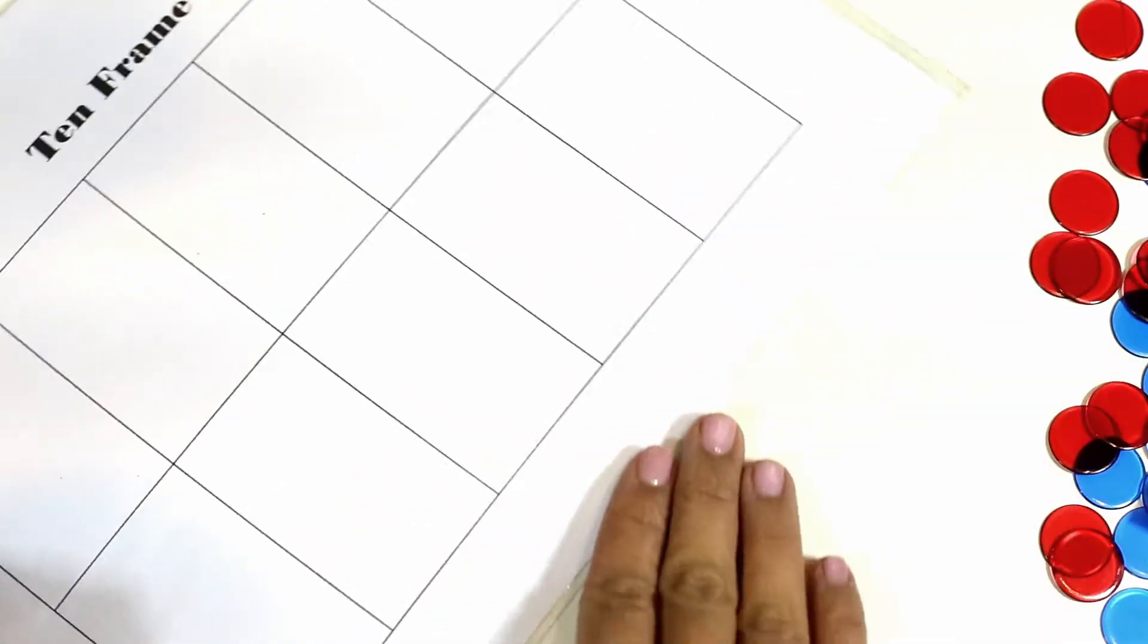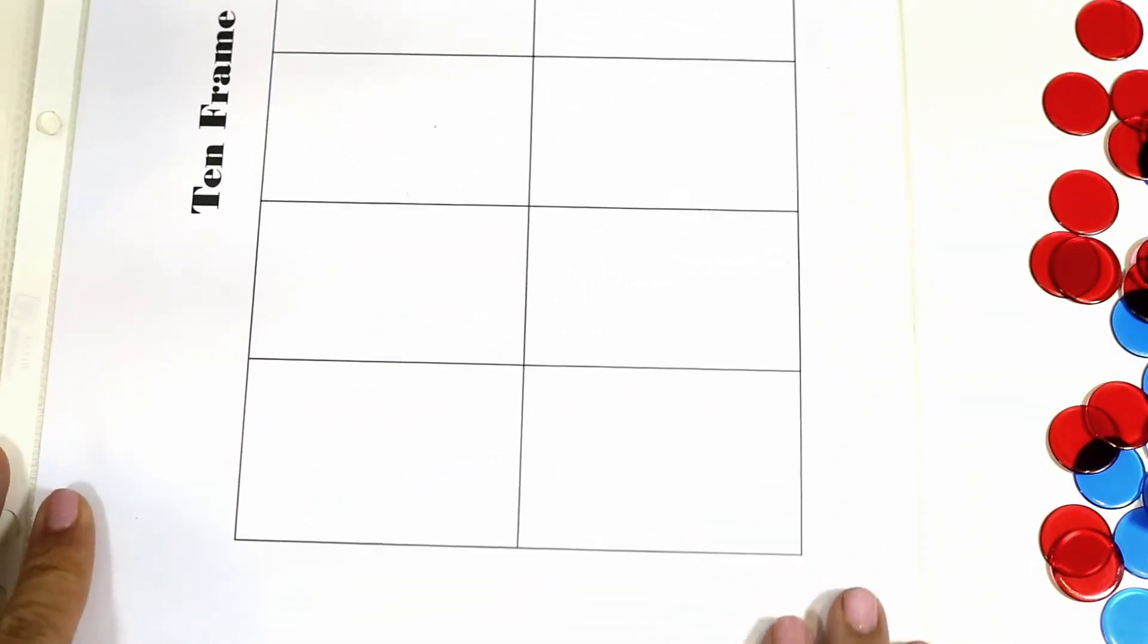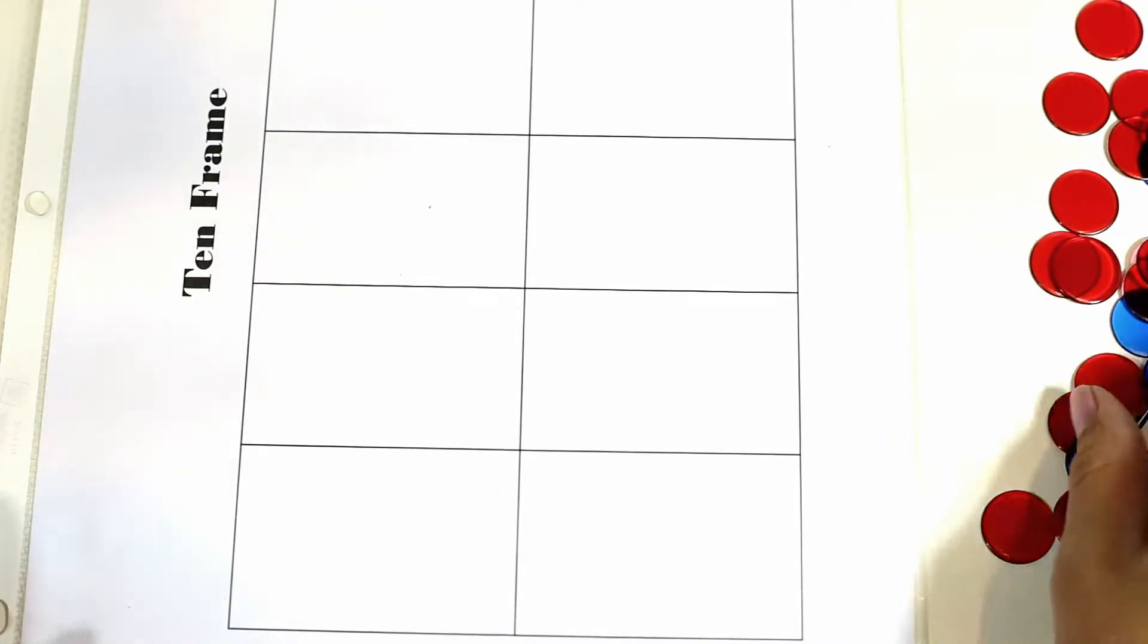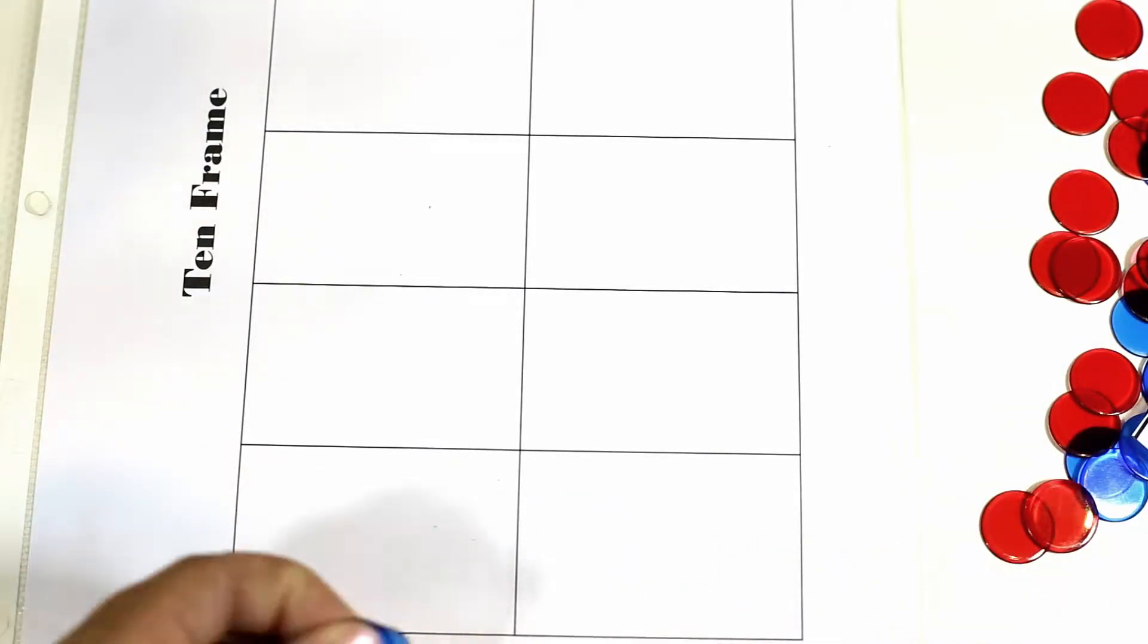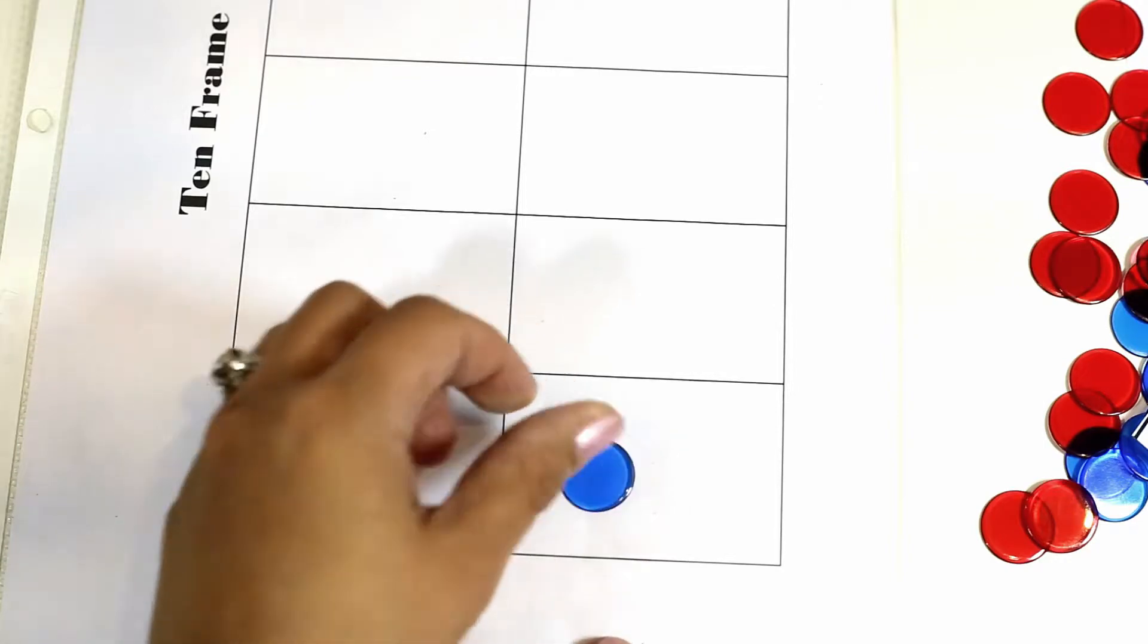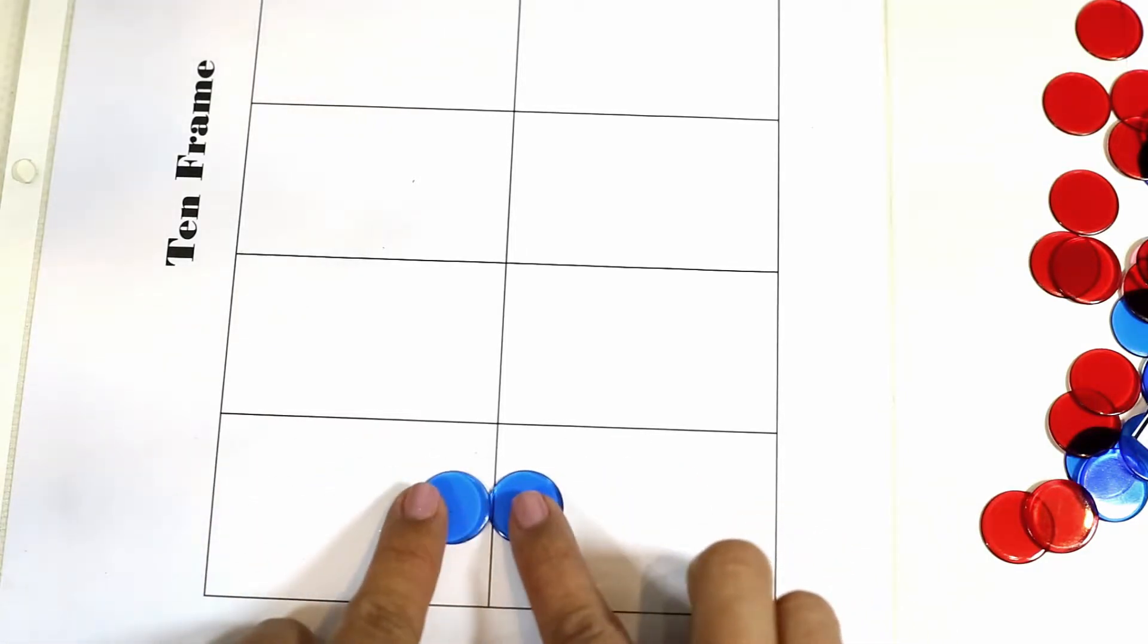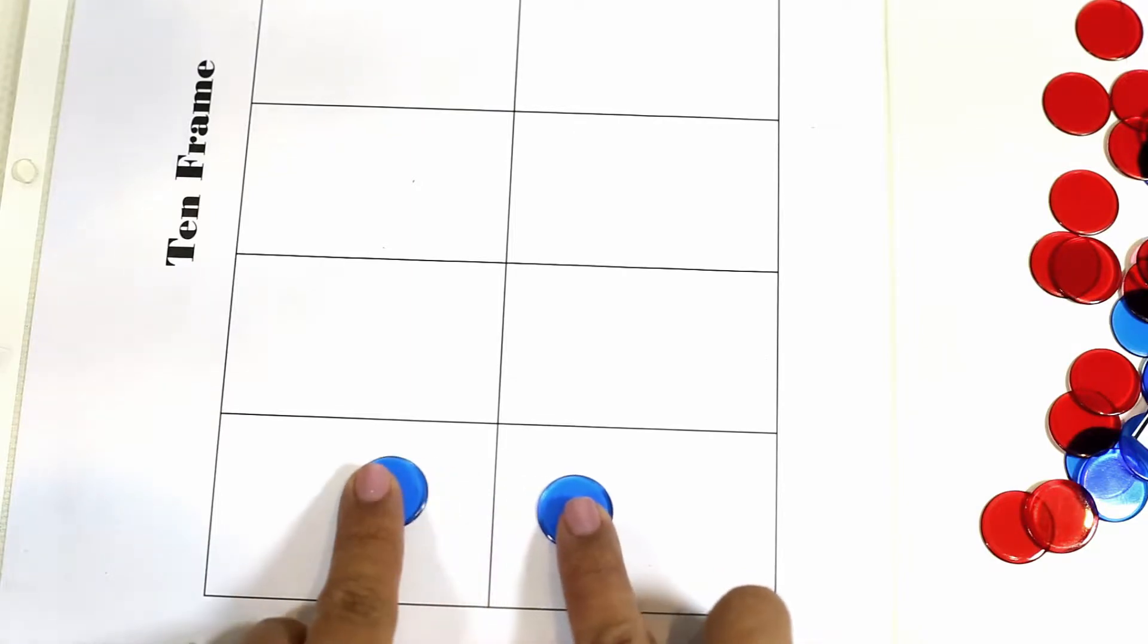The second activity is being able to identify if a number is odd or even. And what you would have to do is you would have to turn this ten frame so that it is vertical and say you are getting the number two. You put down two and obviously it is an even number because what I like to tell my learners is that there is a partner for each counter.